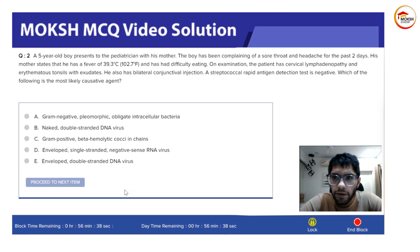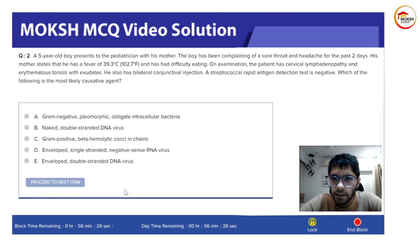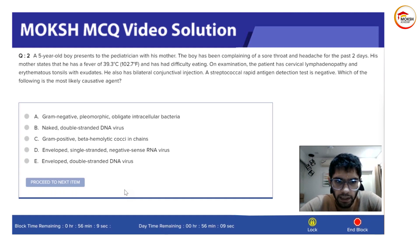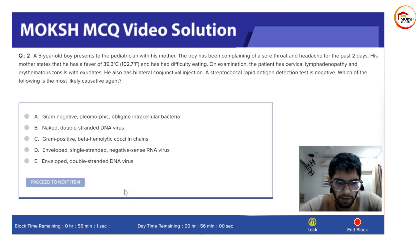On examination, the patient has cervical lymphadenopathy and erythematous tonsils with exudates. He also has bilateral conjunctival injection. A streptococcal rapid antigen detection test is negative. Which of the following is the most likely causative agent? Option A: gram-negative pleomorphic obligate intracellular bacteria. Option B: naked double-stranded DNA virus. Option C: gram-positive beta-hemolytic cocci in chains. Option D: enveloped single-stranded negative-sense RNA virus. Option E: enveloped double-stranded DNA virus.